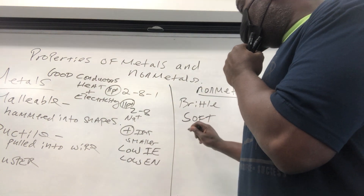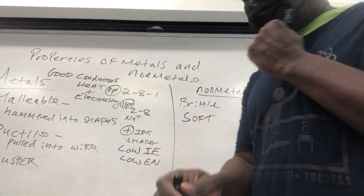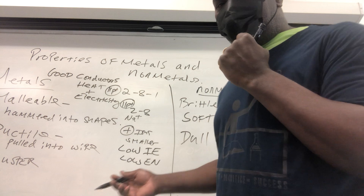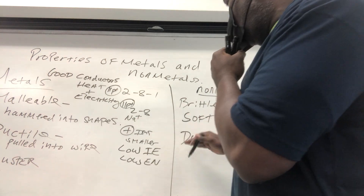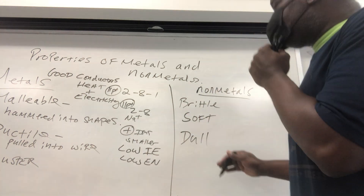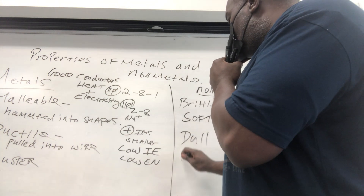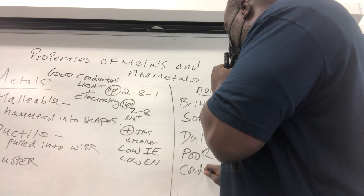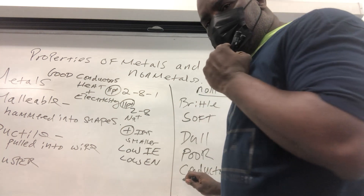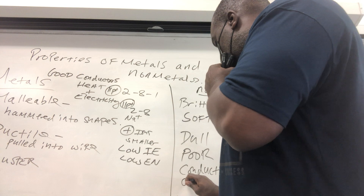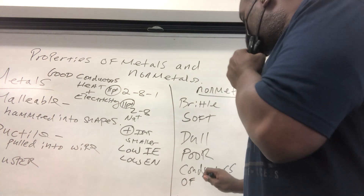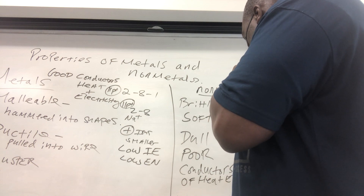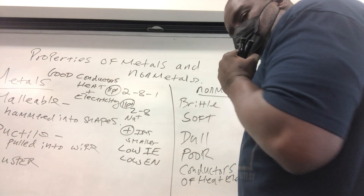In terms of the opposite of luster, non-metals tend to be dull — they're not shiny. And in terms of conductivity, non-metals are poor conductors of heat and electricity.